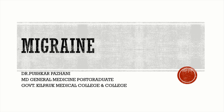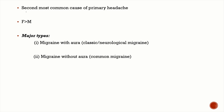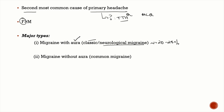Today we're going to be talking about migraine, an important headache disorder. Migraine is the second most common cause of primary headache — tension type headache being the most common. Female patients are involved more than males. There are two major types: migraine with aura, known as classical or neurological migraine, seen in only 20–25% of patients, and migraine without aura, known as common migraine, which is more common.